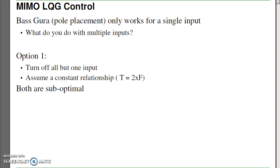One option is to simply turn off all the inputs but one. A second option is to assume a constant relationship, such as the torque is equal to twice the force. Both are suboptimal. With LQG methods, you can actually use all the inputs that you want.